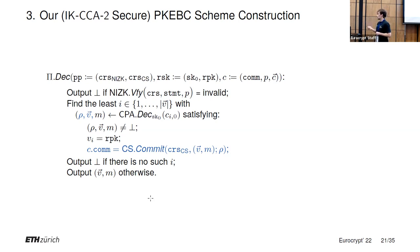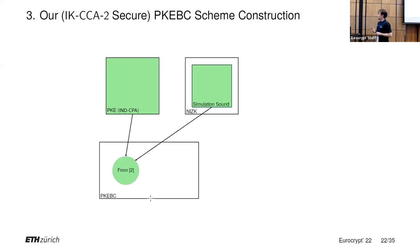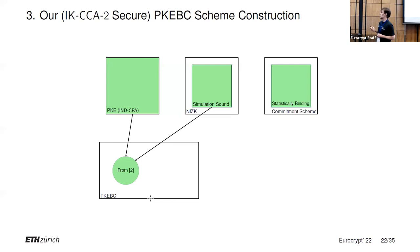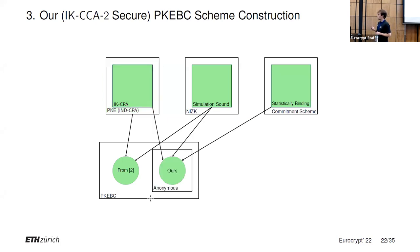For decryption, it is basically the same as before, but now we go over each ciphertext and check which one was meant for this receiver. We try to decrypt each ciphertext until we find one that decrypts correctly, such that the public key of the receiver matches in the same index as in this vector, and such that we can recompute the commitment — this gives correctness. With this additional statistically binding commitment scheme from standard assumptions, and an IK-CPA secure PKE scheme — which also exists from standard assumptions — we get the first scheme satisfying all PKE-BC security notions plus IK-CC2 security.